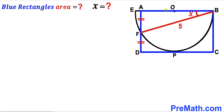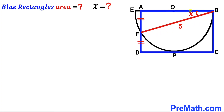Welcome to pre-math. In this video we have a blue rectangle ABCD and a semi-circle with center O put together as shown in the diagram, such that segment AF equals segment DF. Segment BF is 5 units, and angle ABF is represented by X. Our task is to calculate the area of the blue rectangle ABCD and to calculate angle X.